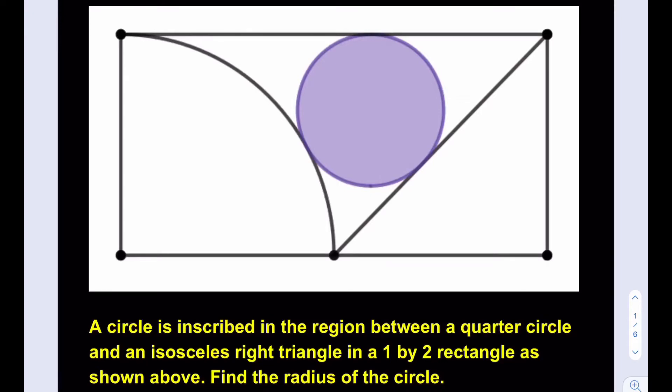Hello everyone. In this video we're going to be solving another awesome geometry puzzle. A circle is inscribed in the region between a quarter circle and an isosceles right triangle in a 1 by 2 rectangle as shown. Find the radius of the circle.